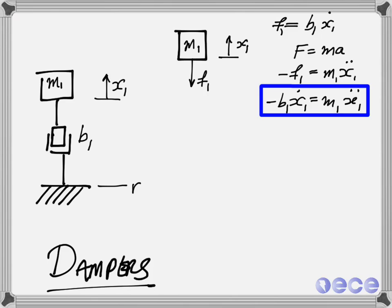Why is it minus? Well, because f1 is drawn in the opposite direction of x1. So when we write this out, minus b1 x1 dot equals m1 x1 double dot. This is our equation of motion.